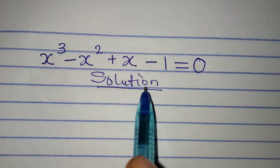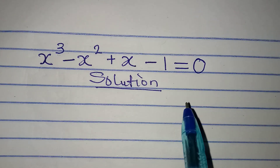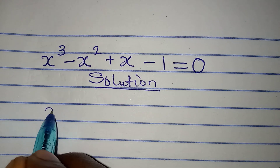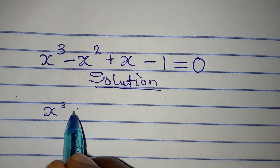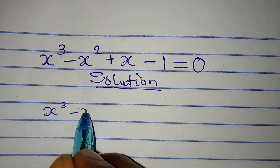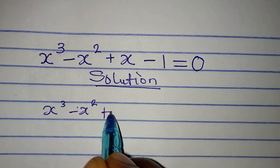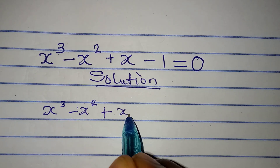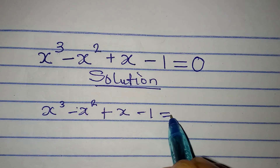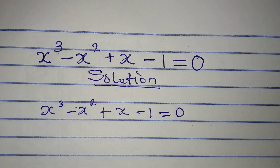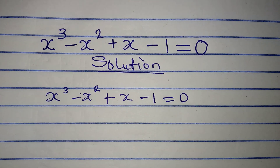Hello everyone. Let's solve this problem very quickly. We have x to the power of 3 minus x to the power of 2 plus x minus 1 equals 0. Now how do we solve this problem?